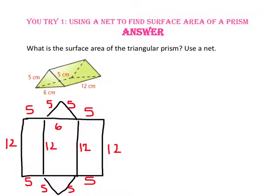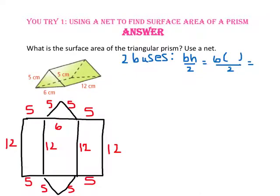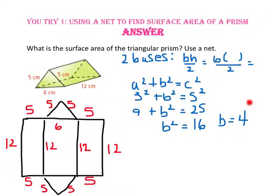Let's start by finding the area of the two triangular bases. Since we don't know the height of the triangle, we're going to have to use the Pythagorean theorem. Notice we have an isosceles triangle, so if we draw that perpendicular height, it is going to bisect the six-unit side and make it three, and the hypotenuse will be five. Using three squared plus b squared equals five squared, we find the height is four centimeters, giving us an area of 12 centimeters squared for each triangular base.